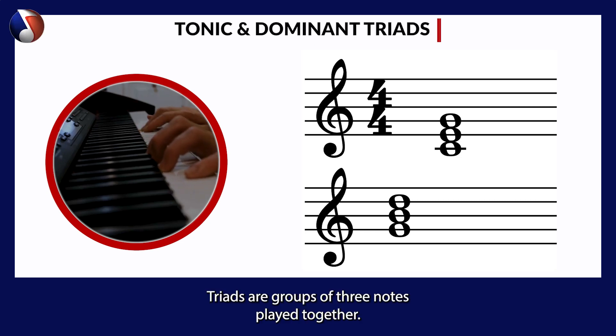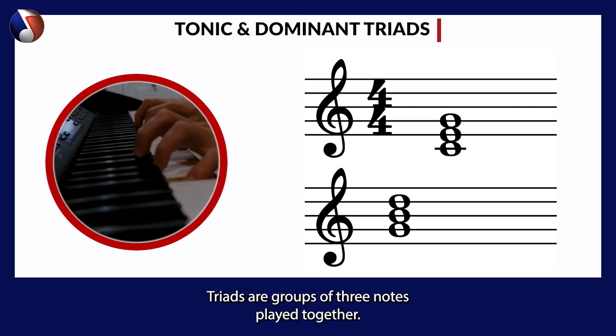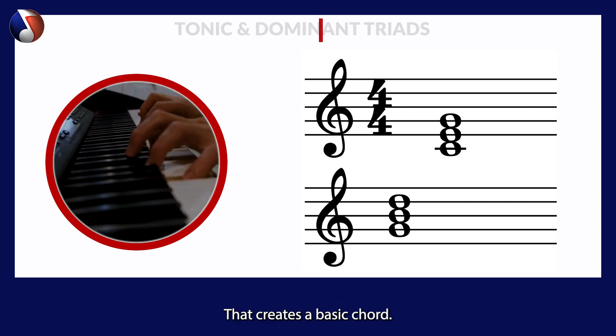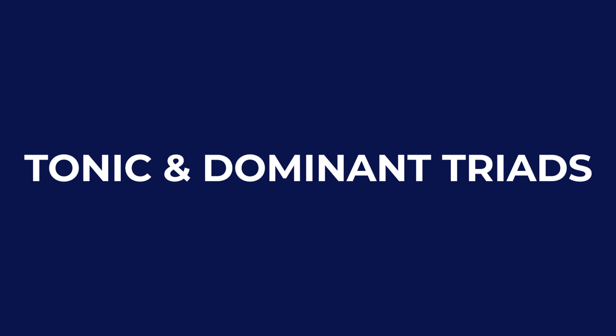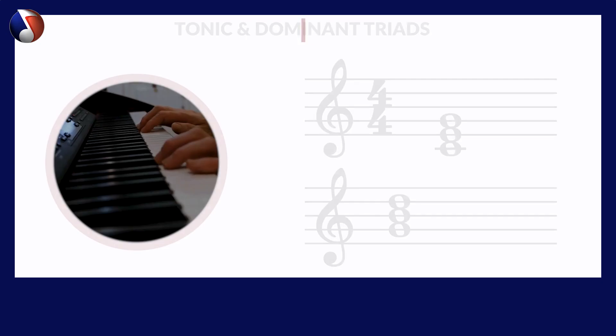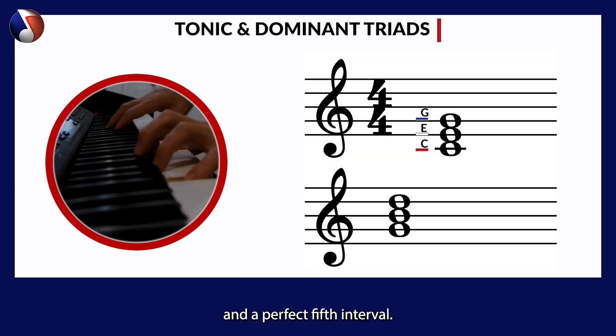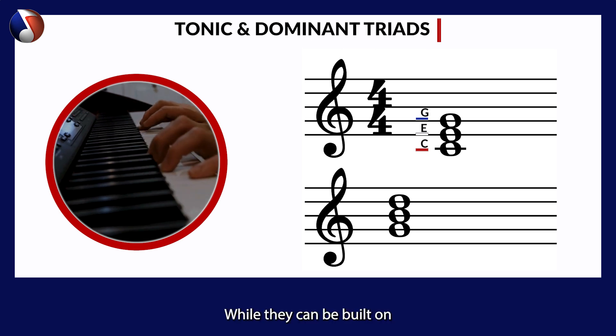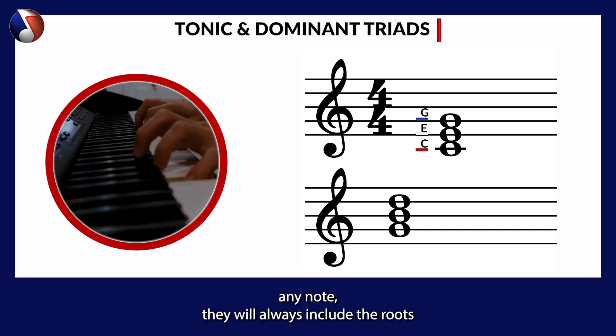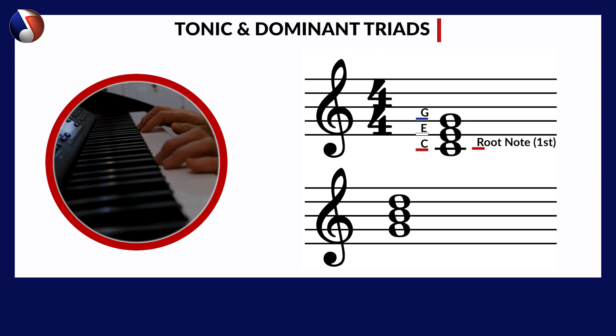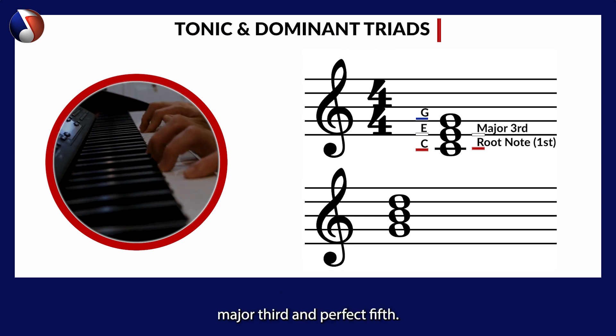Triads are groups of three notes played together that create a basic chord. Let's start by understanding how tonic and dominant triads or chords are formed in major keys. These triads consist of the tonic, a major third interval, and a perfect fifth interval. While they can be built on any notes, they will always include the root, major third, and perfect fifth.